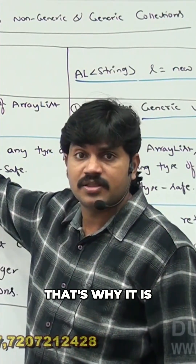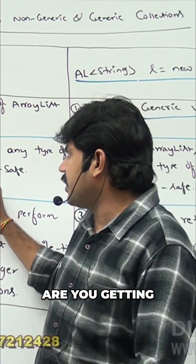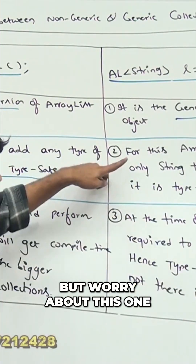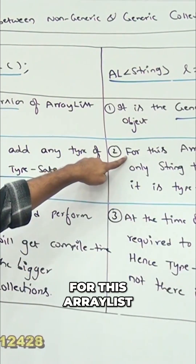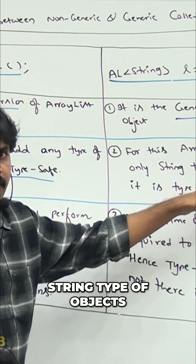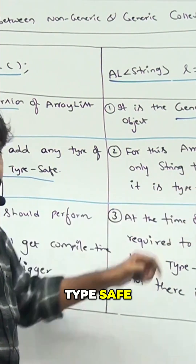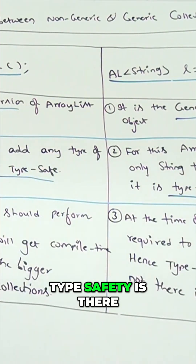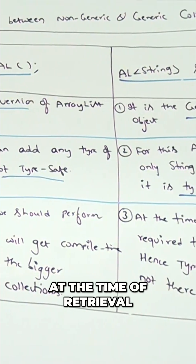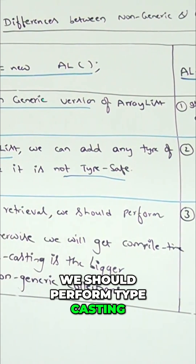That's why the non-generic ArrayList is not type safe. But for this generic ArrayList, we can add only String type of objects, and hence it is type safe. So type safety is there.